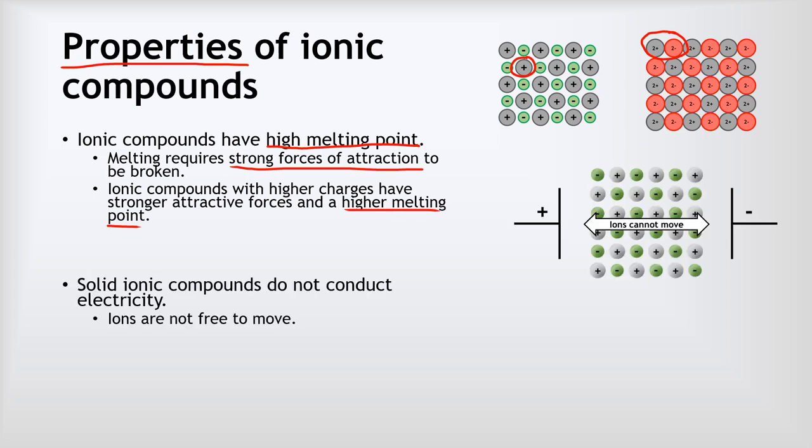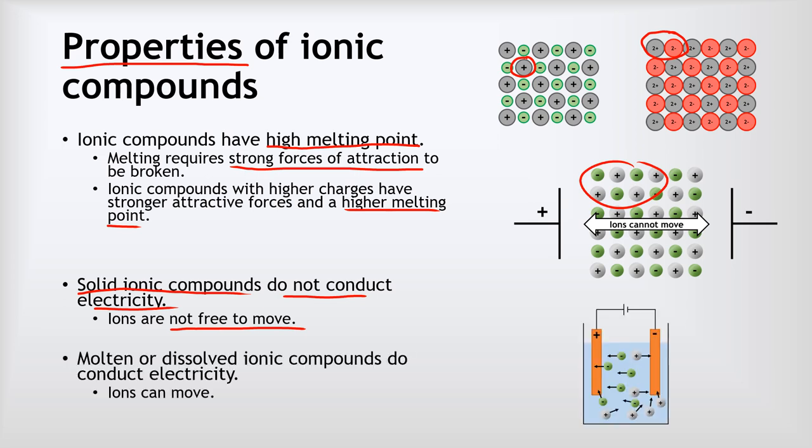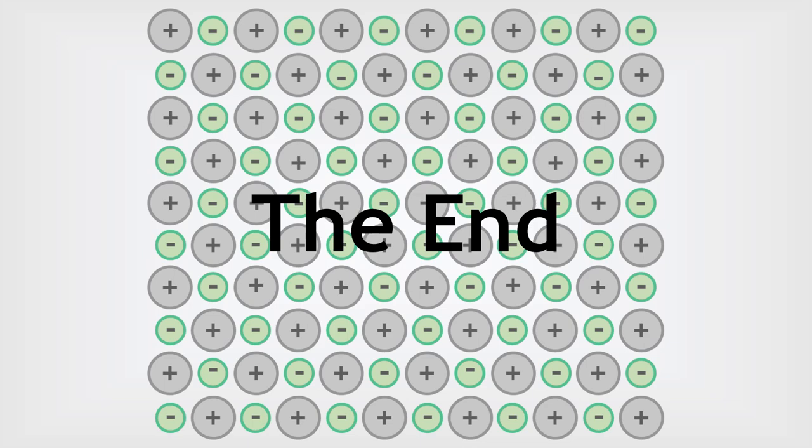The other property is that solid ionic compounds do not conduct electricity because the ions are not free to move. We've got all these ions here, but they can't carry electricity because they can't move - they're locked in place. However, if we melt them by heating or dissolve them in water, then the ions are free to move, and so they do conduct electricity. That leads to a process that we call electrolysis, which will be a subject of a future video. There we are, that is the end. Well done if you got this far.